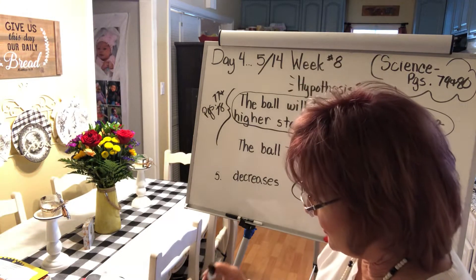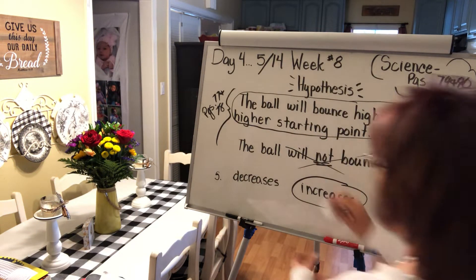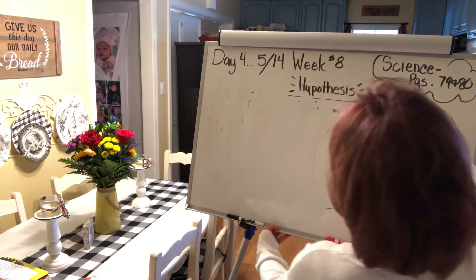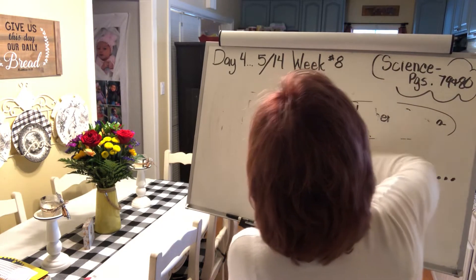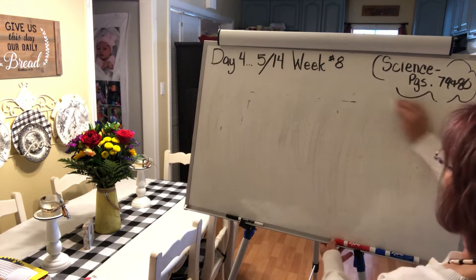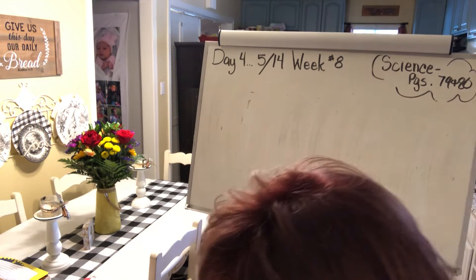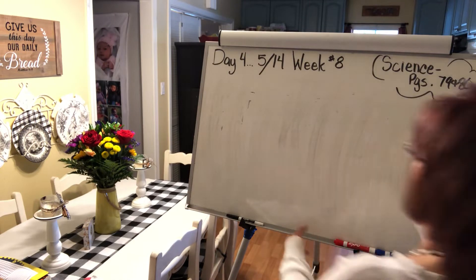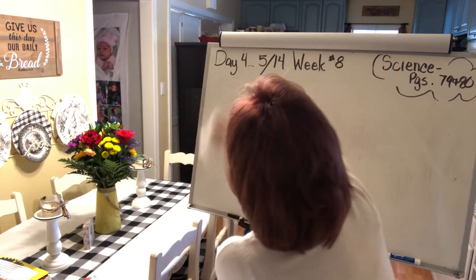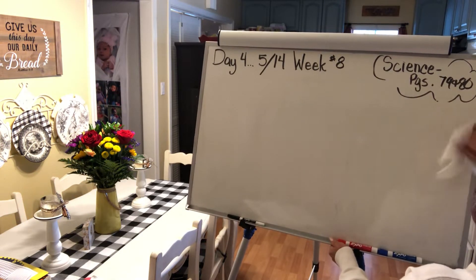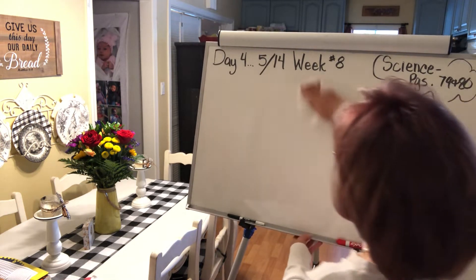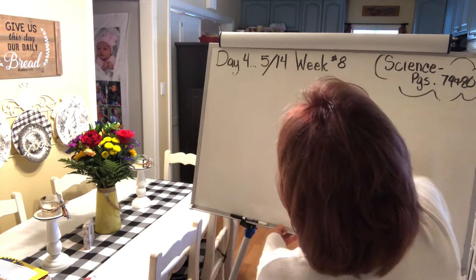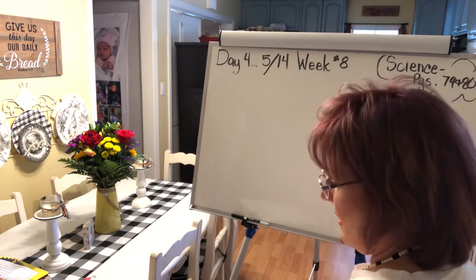Going to pages 79 and 80. That exercise is called a hypothesis — an educated guess. With a science experiment, you always start with a question, then you make a hypothesis, then you do the experiment, and then you draw a conclusion — what you learned from the experiment or test.